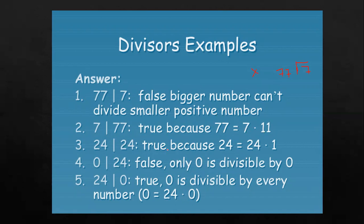24 divisible by 24 is true because 24 equals 24 times 1. Zero divided by 24 is false — you cannot divide any number by zero, so it is a false expression. But 24 over 0 is true because 0 is divisible by every number. So 24 divides 0, and this condition is true.